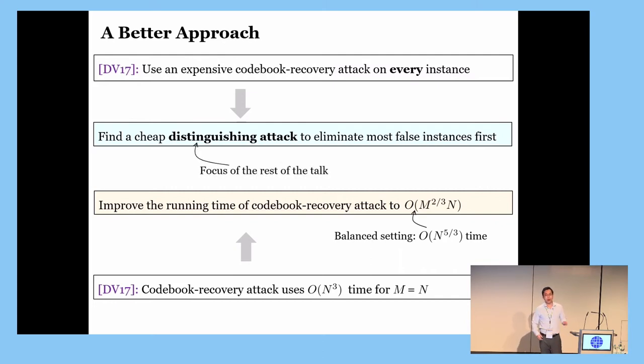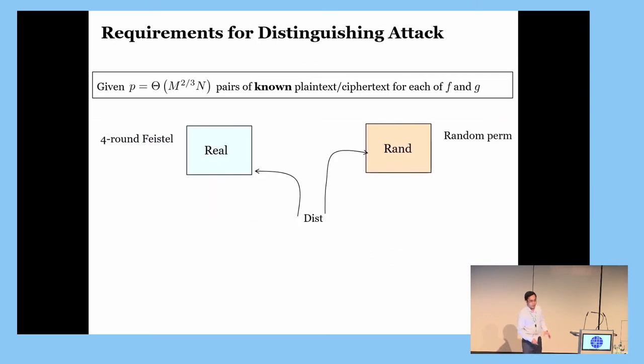So, because the bottleneck of our attack is in the distinguishing part, for the rest of the talk, I will focus on this part. But before we get into the technical details, let's try to understand what is required for the distinguishing attack. Here we are given P pairs of known plaintext, ciphertext for F or F and G. The distinguisher has to tell whether the ciphertext were produced in the real world, namely, produced under a four-round Feistel, or they were produced in the random world, namely, by a random permutation.